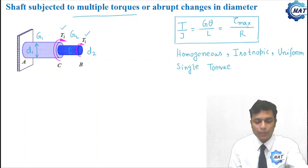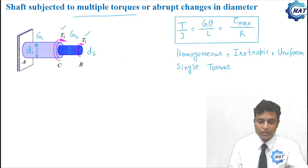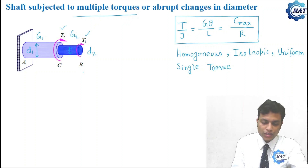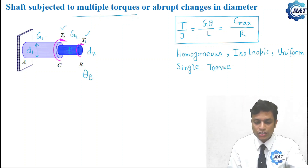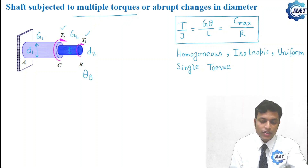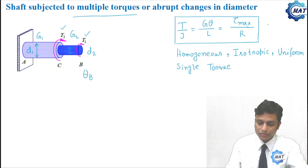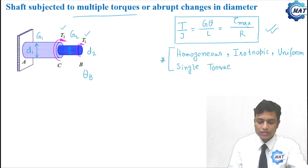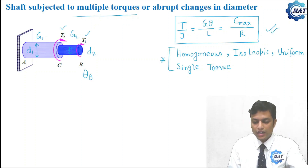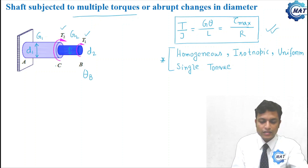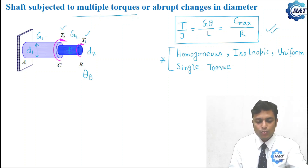There is an abrupt change in diameter from D2 to D1. In such a situation, how do we calculate the angle of twist at free end B? We will divide the shaft into parts such that the limitations of the equation of torsion are satisfied.